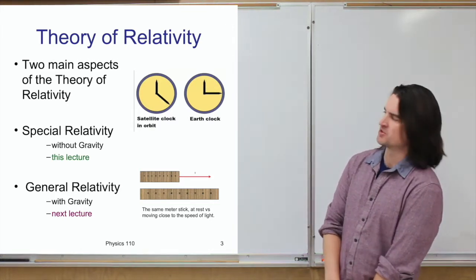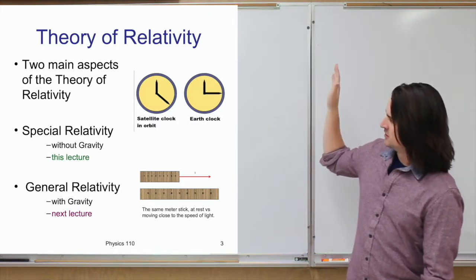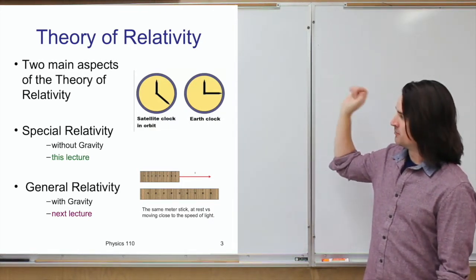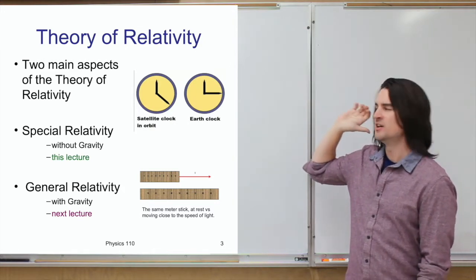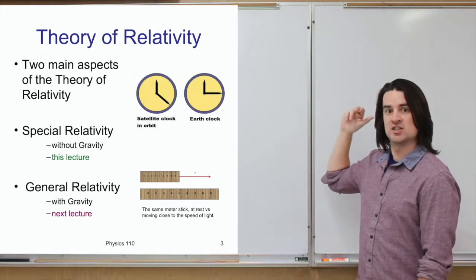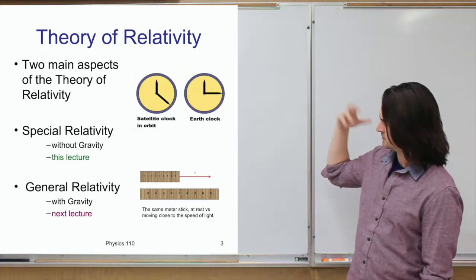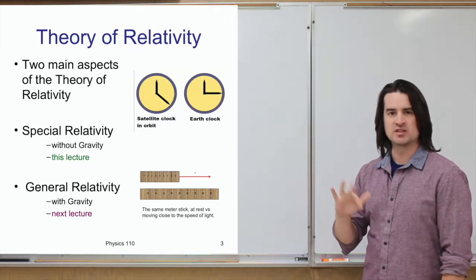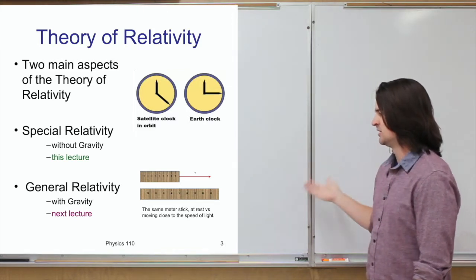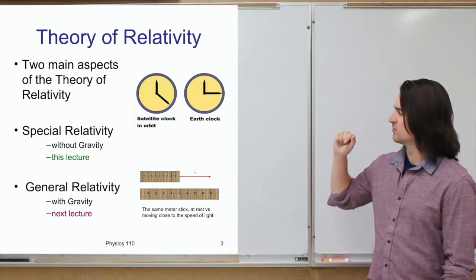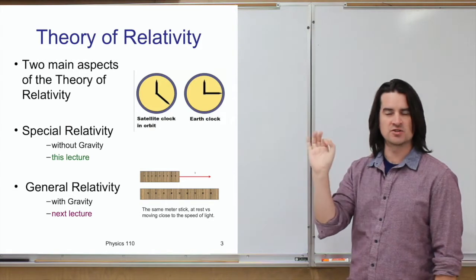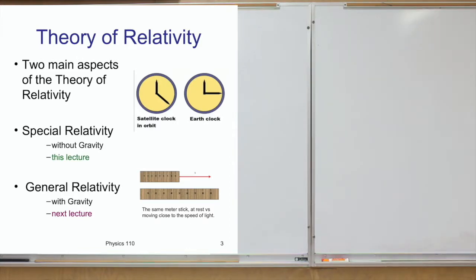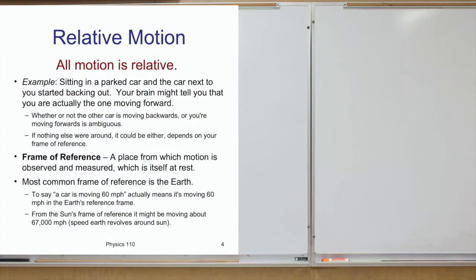Just a little preview of what's to come: one image shows clocks — one in a satellite in orbit and one on Earth — indicating they're not showing the same amount of elapsed time. Another image shows two pictures of the same meter stick: one where it's at rest, and the other when it's moving very, very fast at a constant rate, close to the speed of light.